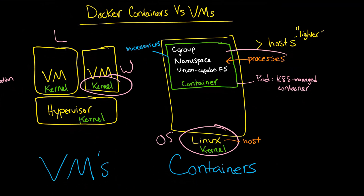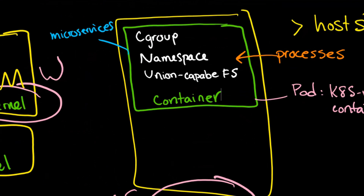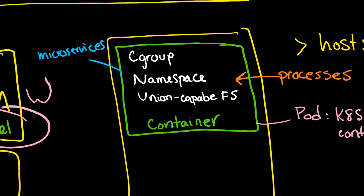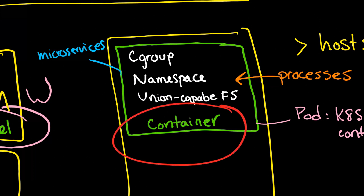Those processes run inside a container. So what is a container? The container actually holds Cgroups, namespaces, and UFS, or union-capable file systems. Most of the time, a container actually seems like and acts like a particular operating system — and that would be a Linux operating system, although there is some variation.